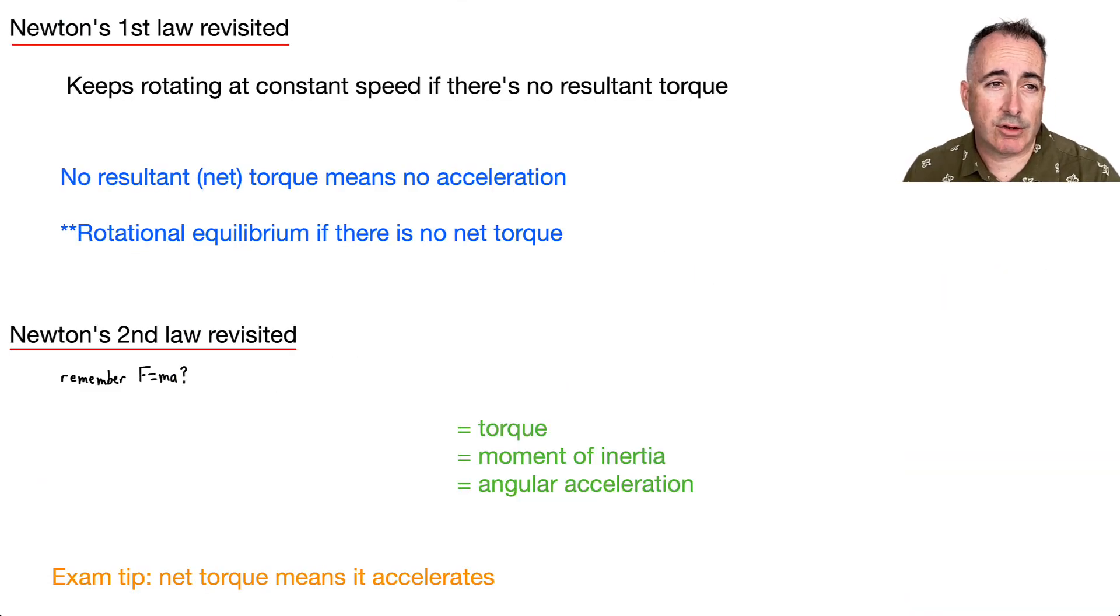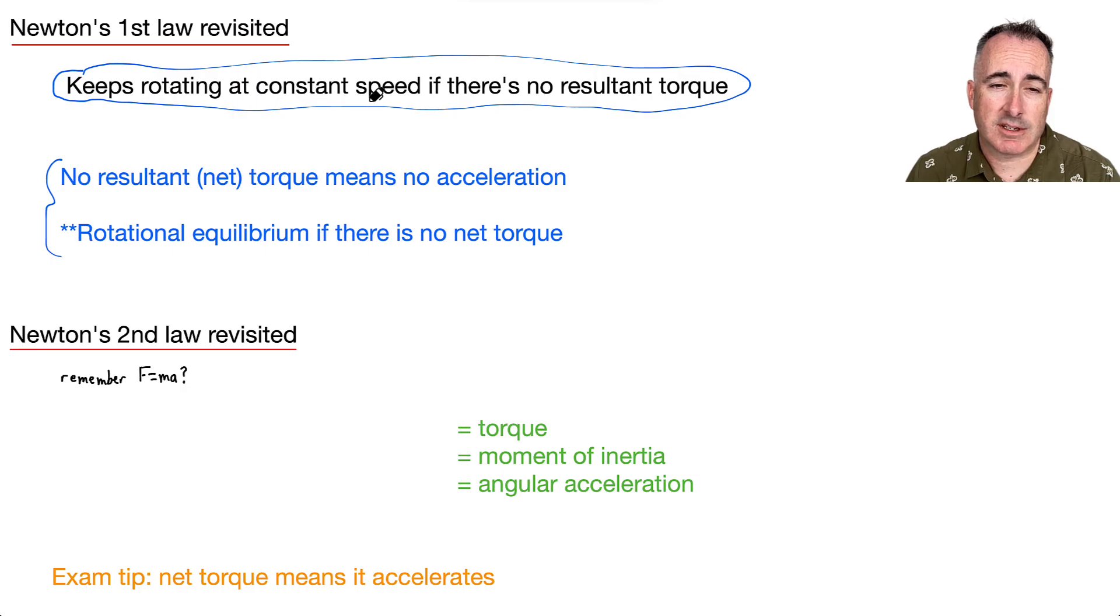So let's go back and look at Newton's first law. If you remember it from linear terms, it says that an object in motion stays in motion unless it's acted upon by an external unbalanced or net force. Well, there's a rotational version as well. It says that it's going to keep rotating at a constant speed as long as there's no resultant or net torque. So if there's no resultant net torque, it means there's no acceleration. It just keeps spinning at a constant speed. Just like in linear terms, if there's no net force, then there's no acceleration. It goes at a constant speed. And keep in mind, we have something that we call rotational equilibrium. That's just if there's no net torque.